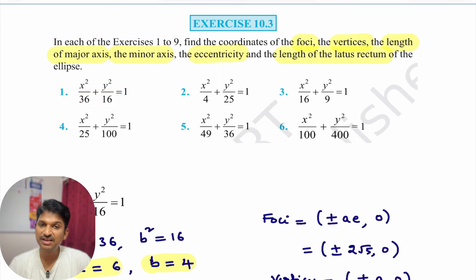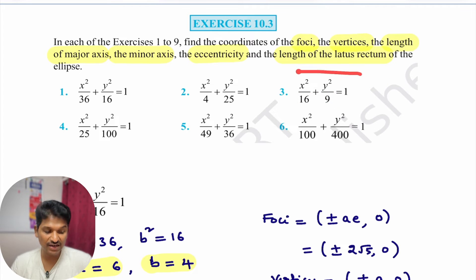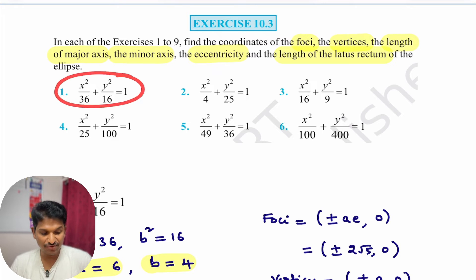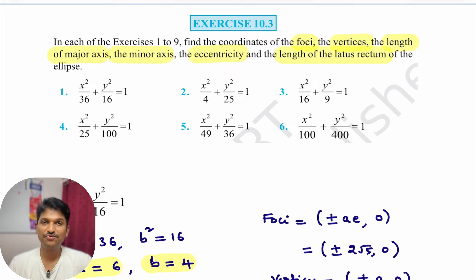In this problem, a is greater than b. Looking at the remaining problems: problem 2 has a=2, b=5 (a < b); problem 4 has a=5, b=10 (a < b); problem 6 has a=10, b=20 (a < b). Problems 1, 3, and 5 all have a > b. The key point is: you need to know which type of ellipse it is and apply the correct formulas.